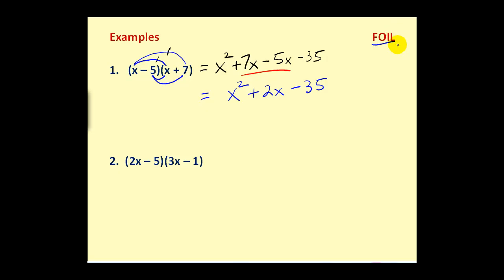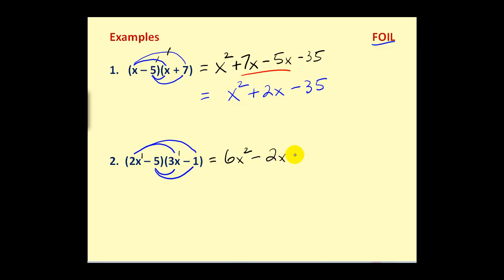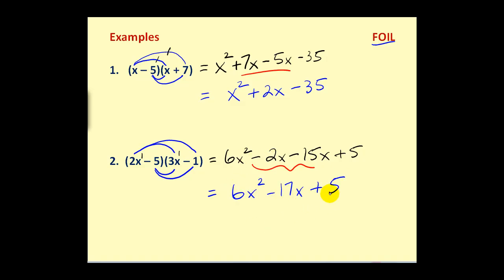Personally, I choose not to use FOIL because I prefer to view it as a pattern of multiplication. Here we multiply 2X times both terms in the second, and then we multiply negative 5 times both terms in the second, so we'll have four products. 2X to the first times 3X to the first equals 6X squared; 2X times negative 1 is negative 2X; negative 5 times 3X is negative 15X; and negative 5 times negative 1 equals positive 5. Combining like terms, our final product is 6X squared minus 17X plus 5.